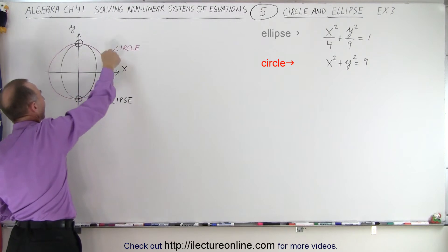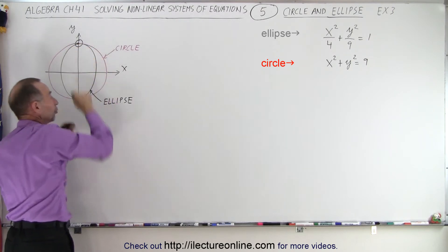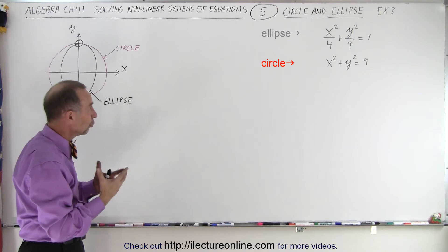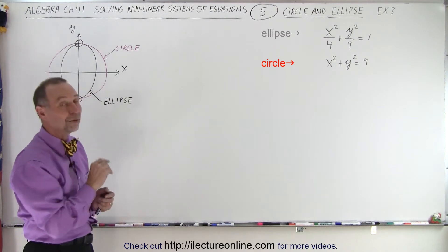So the ellipse is drawn like this, and the circle is drawn like this. There's only two points where they're at the same location, or two points of intersection. How do we find those?